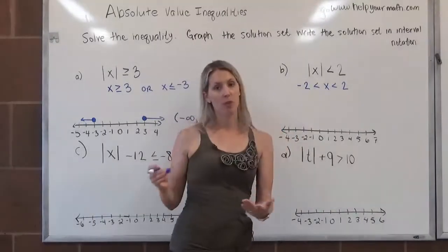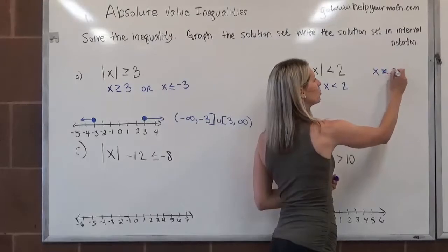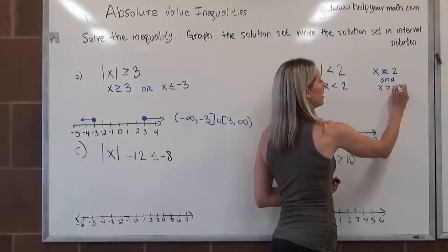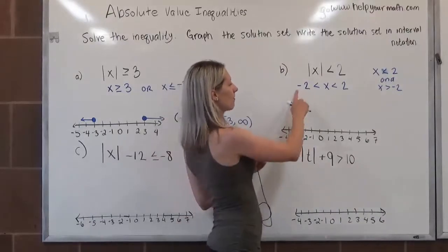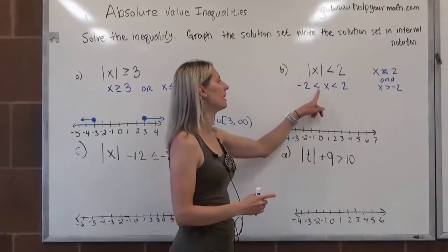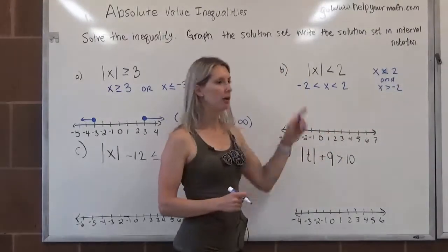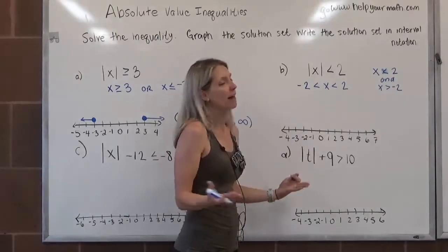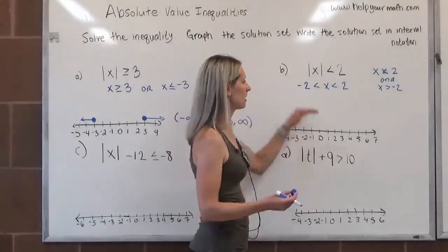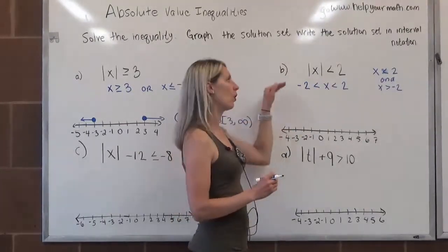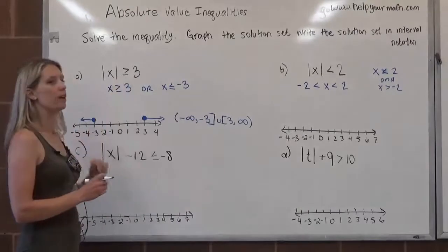Students might notice I said x had to be greater than negative 2, but I wrote 'negative 2 is less than x.' That's not wrong — negative 2 is less than x is equivalent to x is greater than negative 2. When writing a compound inequality, we only use the less than symbol and it has to mathematically make sense. You cannot do that with greater than or greater than or equal to; that would be improper notation.